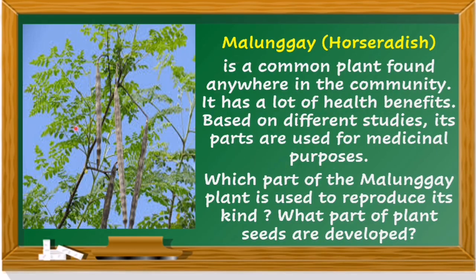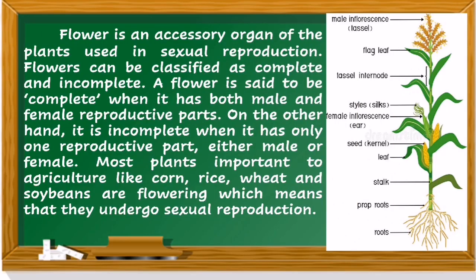This is the picture of malunggay, or horseradish. It is a common plant found anywhere in the community and has a lot of health benefits. Based on different studies, its parts are used for medicinal purposes. Which part of the malunggay plant is used to reproduce its kind, and what part of the plant are seeds developed from? Now look at your surroundings — what plants show sexual reproduction?